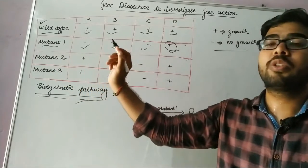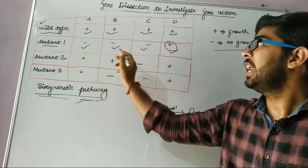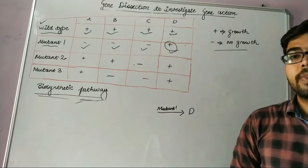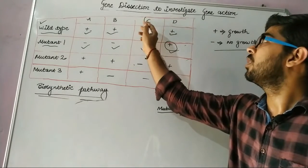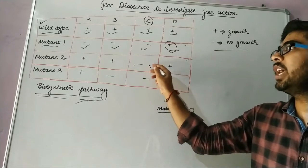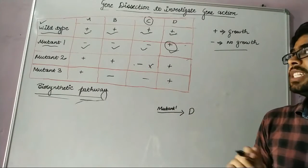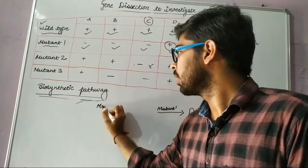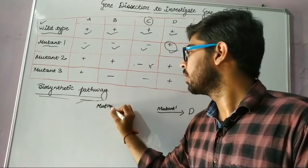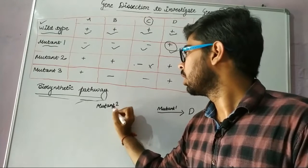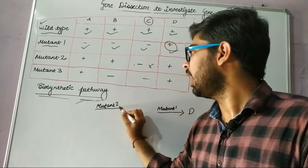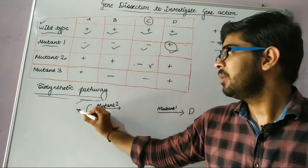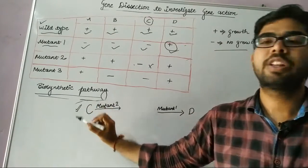In the second case, when mutant 2 is grown in presence of A, B, and D, there is growth. But in the case of compound C, there is no growth. This suggests that mutant 2 is found after compound C in the pathway, making C the beginning molecule of this pathway.